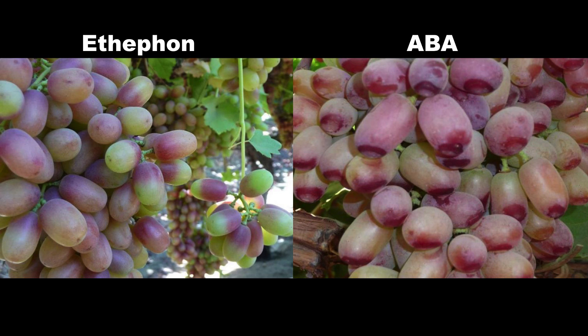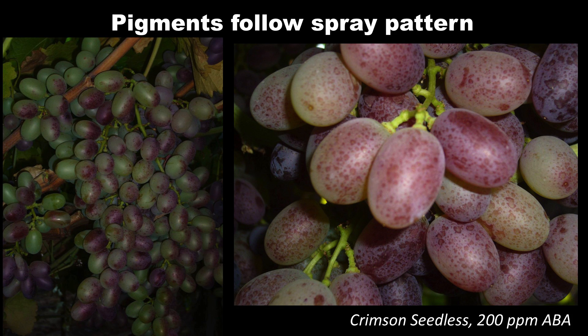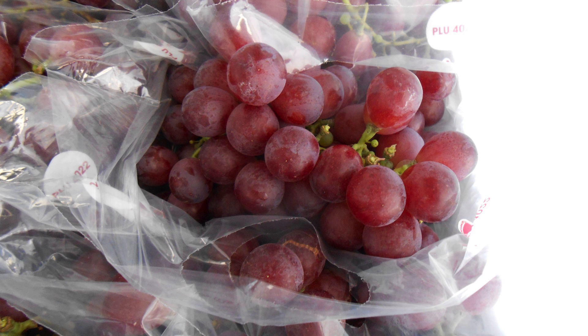The differences between ethephon and ABA may be observed by the unique pigment patterns that develop during the early stages of berry colouring. Ethephon-treated fruit appears more diffuse in colour, while ABA-treated fruit may have a more concentrated colour around the spray droplets.